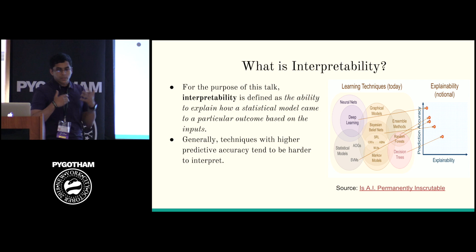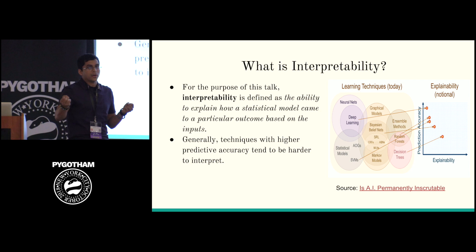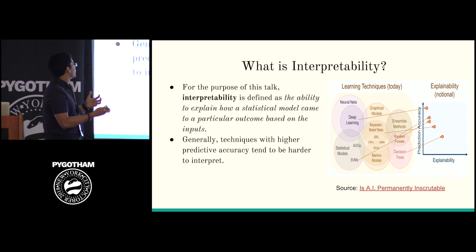For the purpose of this talk, I'm going to define interpretability as the ability to explain what your machine learning model is doing based on a particular outcome. You take some input, you get some output — why did you get that output? This is a recurring problem in machine learning: techniques with really high predictive accuracy tend to be harder to interpret.